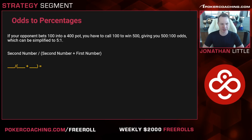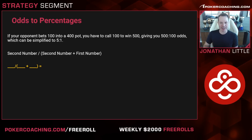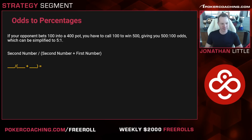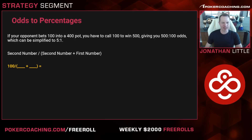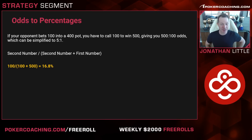Let's work through an example. Say your opponent bets 100 into a 400 pot. You have to call 100 to win a total of 500, giving you 500 to 100 odds, which simplifies to 5 to 1. Converting that: 100 divided by (100 plus 500) is 100 divided by 600, which is 16.8%. So when your opponent makes a tiny bet, you only need to win 16.8% of the time to justify continuing — and a lot of hands will qualify.